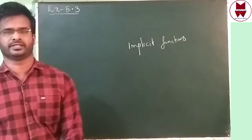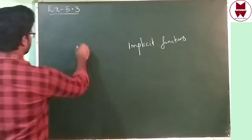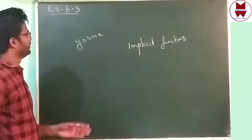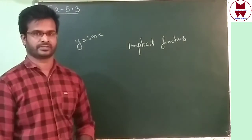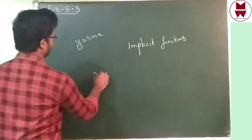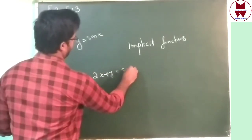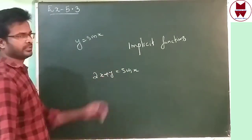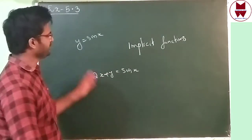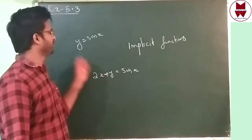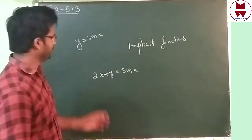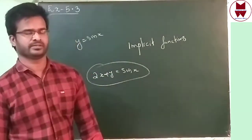What does implicit function mean? Already you have studied y = sin x — that is one type of function. Implicit function means something like 2x + y = sin x. Here we can differentiate directly, or we can bring 2x to the right side and make it the same as the previous form. This type of function is known as an implicit function.